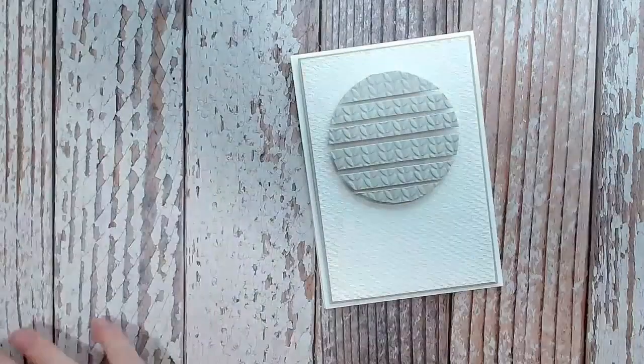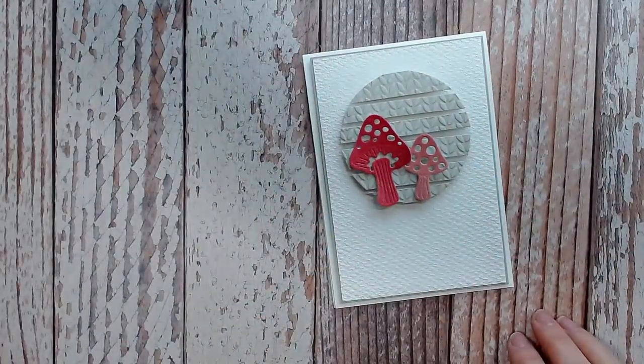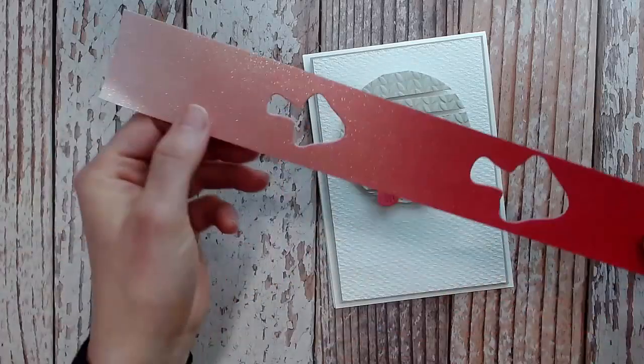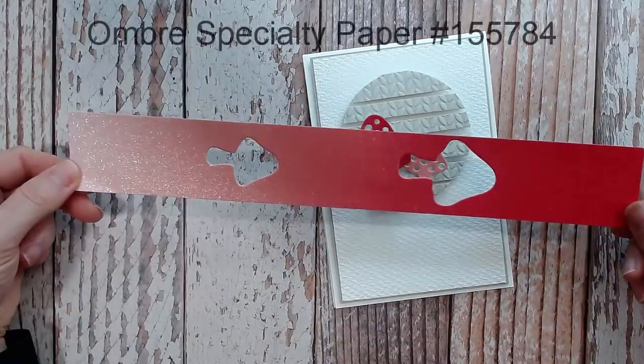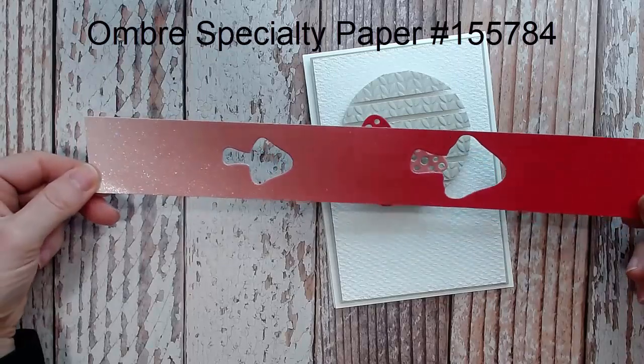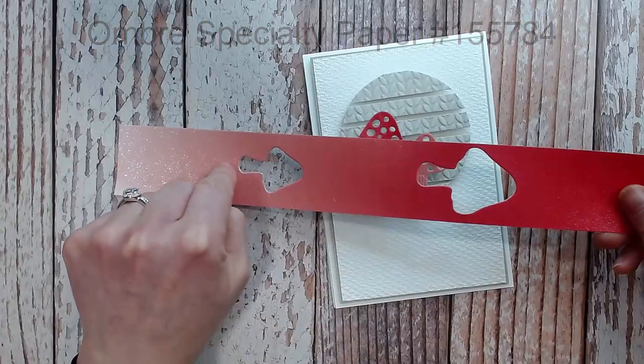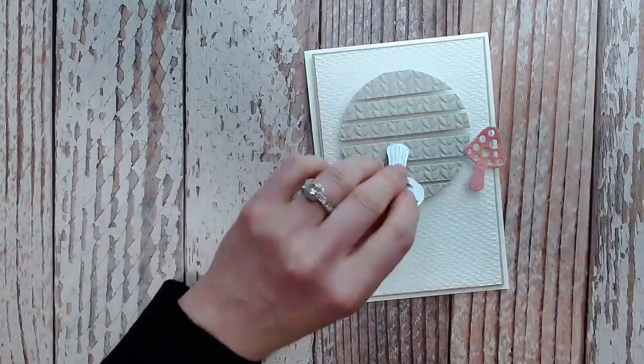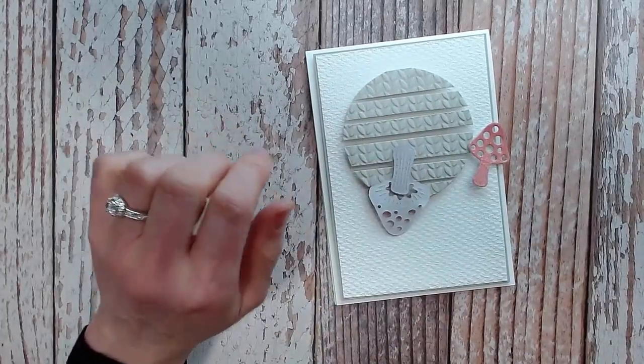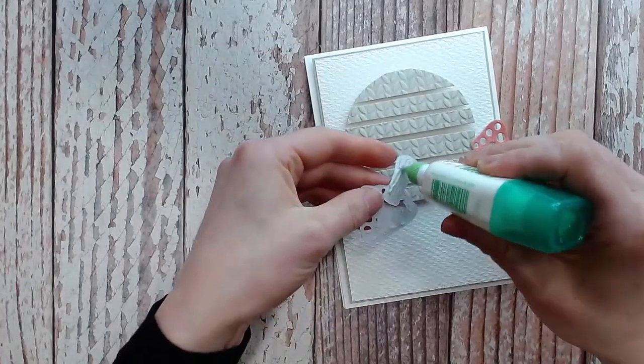I thought it would be fun to use these toadstools and I cut those out of the shimmer paper or glitter paper I think is actually what it's called. You can see that it's quite ombre so I spread the toadstools out so that I got a light one and a darker one. I'll put those on with the bigger one using just glue or you could use tape so that it's down flat.